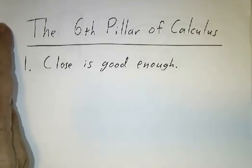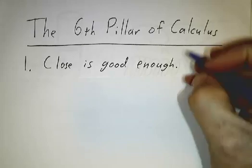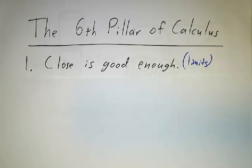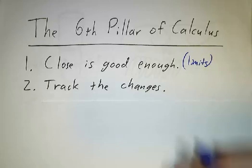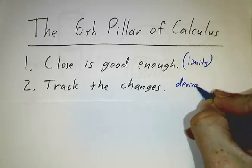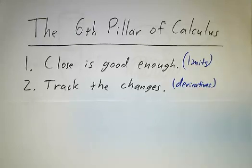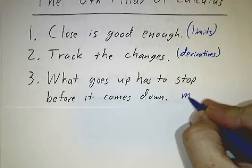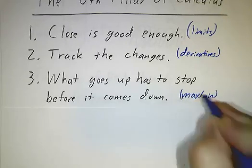So to review, we start off calculus with the idea of close is good enough. Everything in calculus you do by taking limits. We learn to understand a function by seeing how quickly it changes, and we built up a gigantic technology of derivatives to see how quickly a function changes. We noticed that things that go up have to stop before they come down, and that was the basic idea of max min.